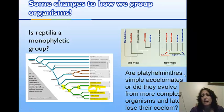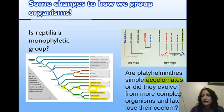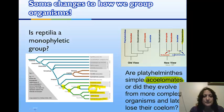Another example is the platyhelminthes. In introductory biology, they were placed low on the evolutionary tree, but that's actually incorrect. Platyhelminthes are higher up. You may have learned they were acoelomate — lacking a coelom — but it turns out they probably had a coelom and lost it along the way. They are actually more closely related to the annelids than the annelids are to the nematodes — the annelids being segmented worms like leeches and earthworms, and nematodes being roundworms.